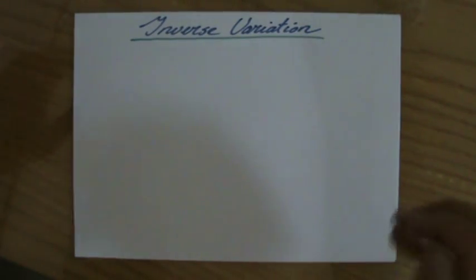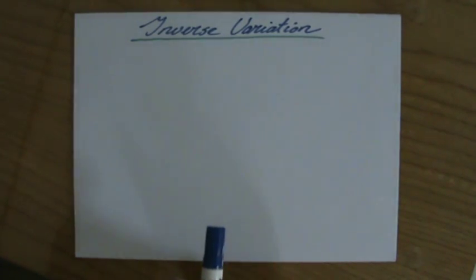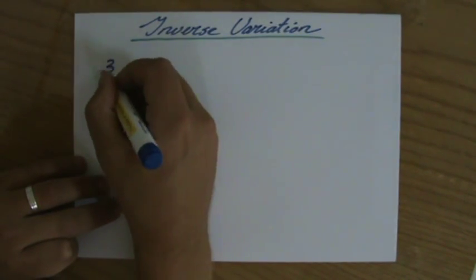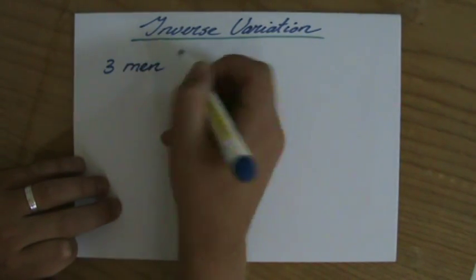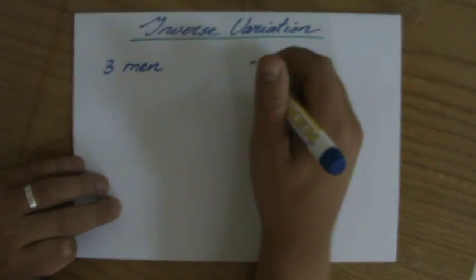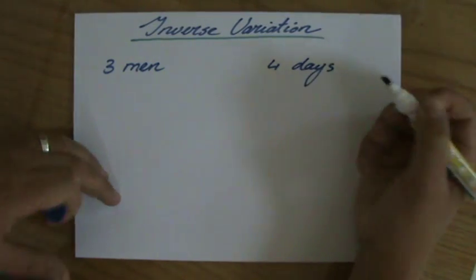Inverse variation, I'm just going to give you an example of inverse proportion. I always use the same example where I say, it's going to take three men to paint my house in four days. Three men will take four days to paint my house.